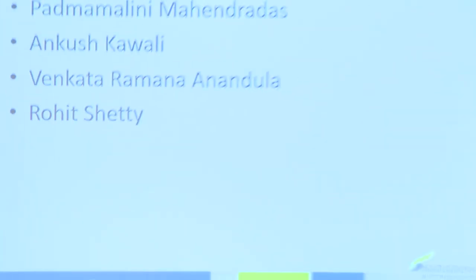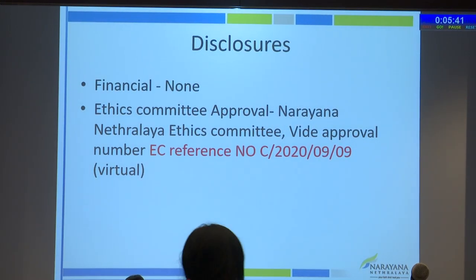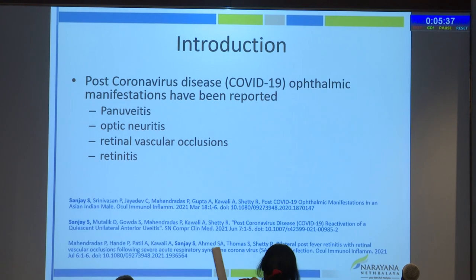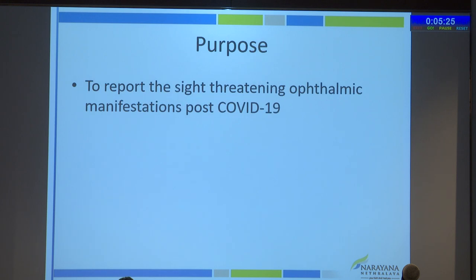Dr. Sanjay Srinivasan presented on sight-threatening ocular manifestations in post-COVID-19 disease and its challenges. Seven Asian Indian patients — six male, one female — were diagnosed with coronavirus disease or had positive COVID-19 IgG antibodies. All presented with severe pain, acute loss of vision, redness, and watering. Presenting visual acuity ranged from no perception of light bilaterally to counting fingers at two meters. COVID diagnosis had occurred 14 to 60 days before presentation, with ocular manifestations appearing 2 to 13 days after COVID diagnosis.